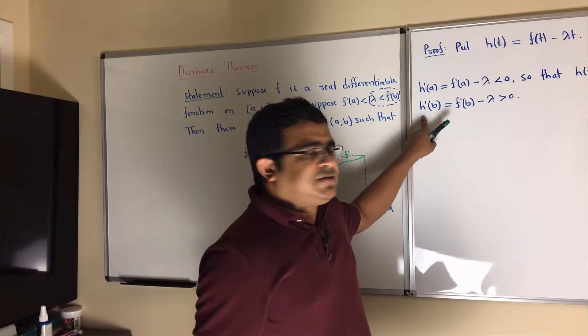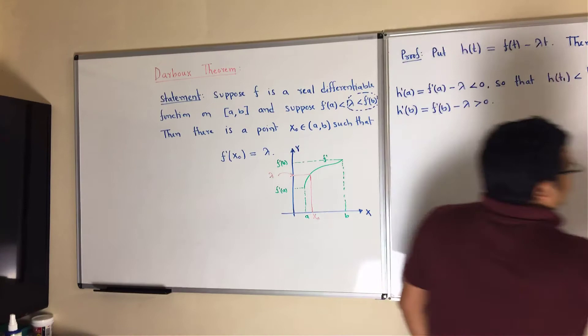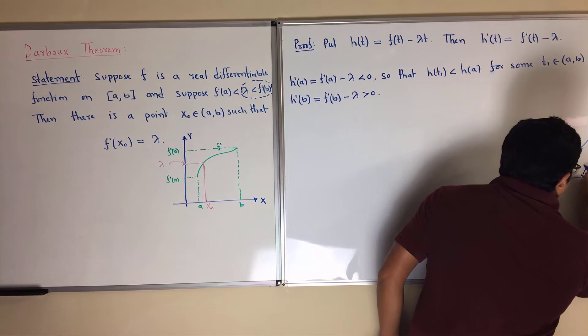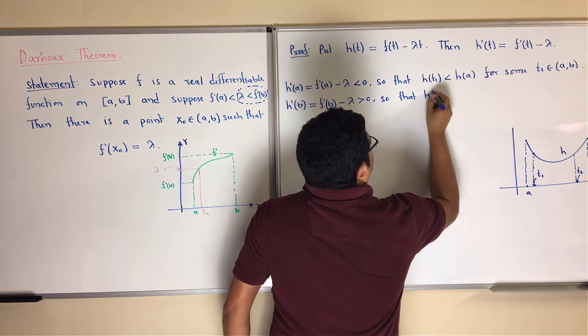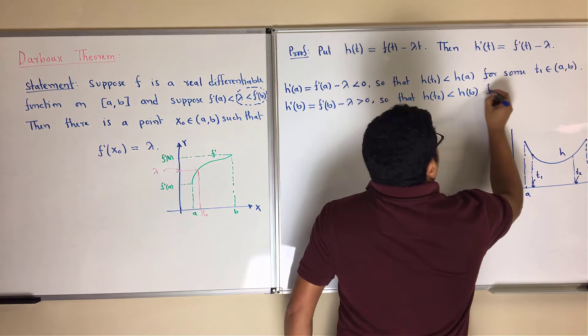Since at b the first derivative is greater than 0, the function h is increasing at that point. If you consider any point t2 which is close to b, then h of t2 would be less than h of b, for some t2 in (a, b).